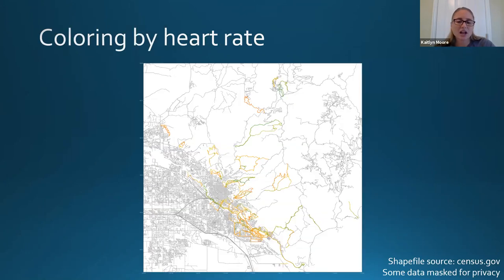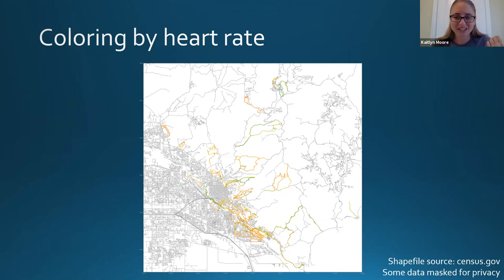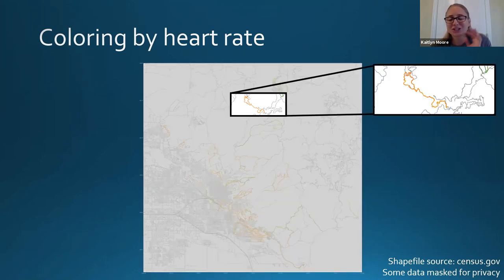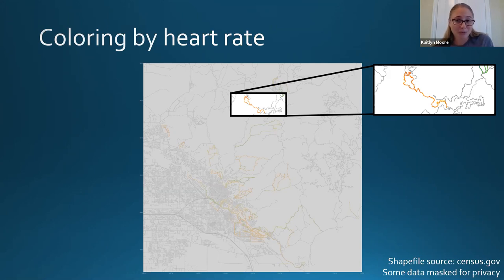Here I was coloring by heart rate, mostly for my own edification to see where I was really stressed out on certain workouts. As a first-pass validation: this particular run I know was on about an 85-degree day running with someone who normally runs about two minutes per mile faster than me. So yeah, I had a high heart rate — not a big surprise.